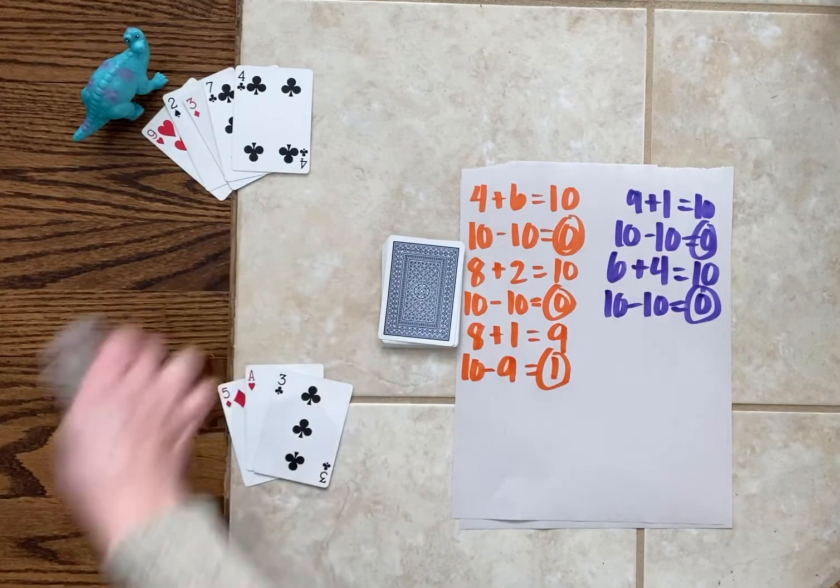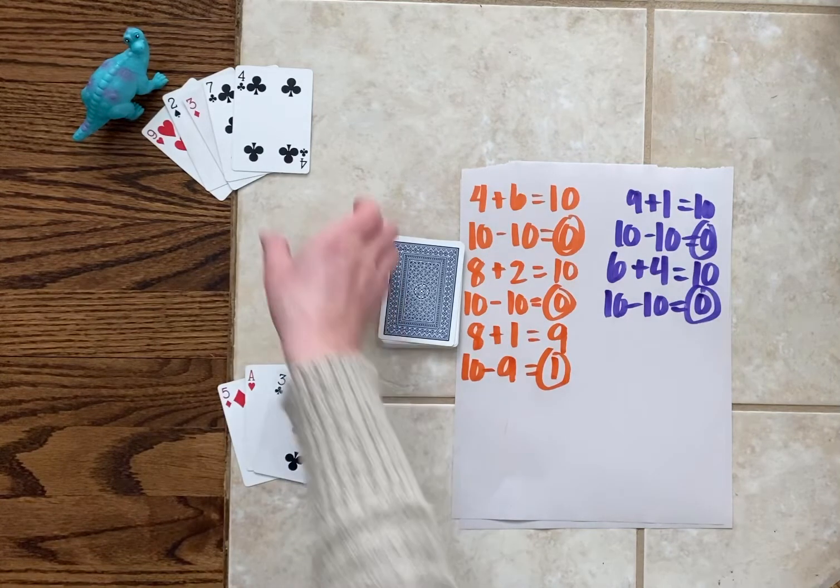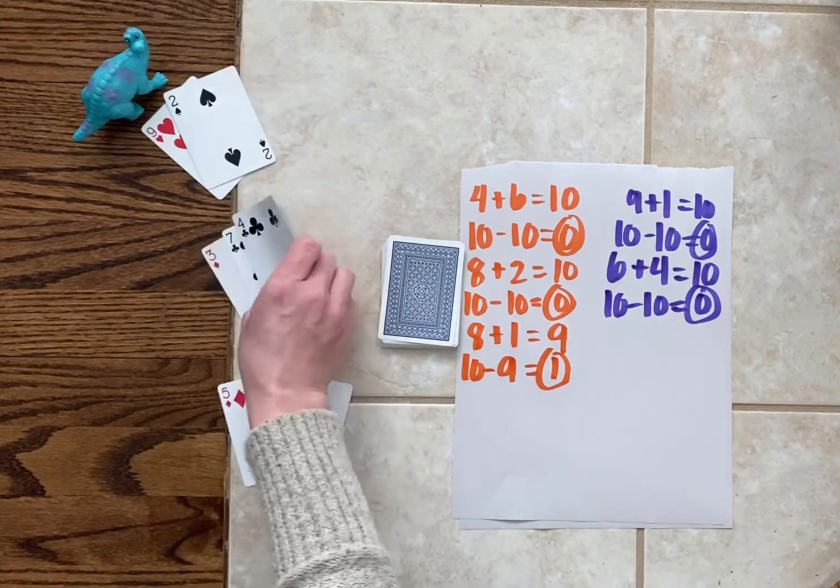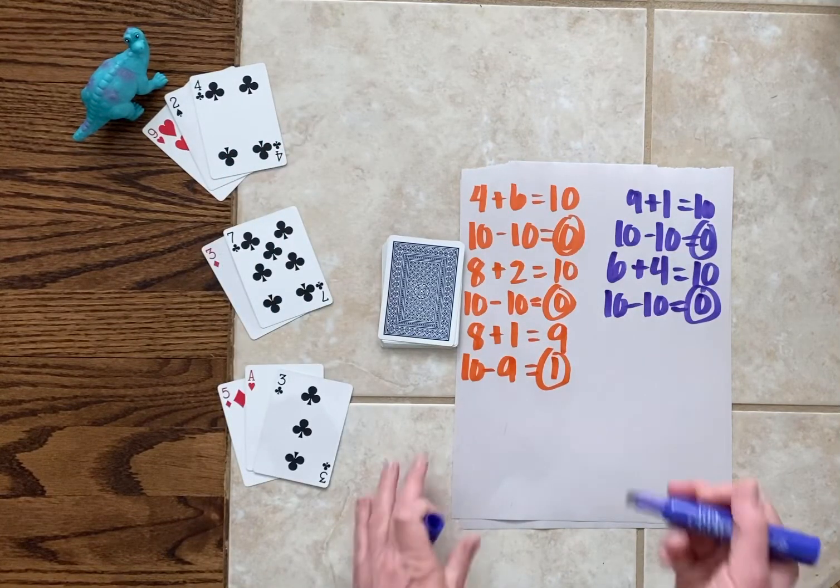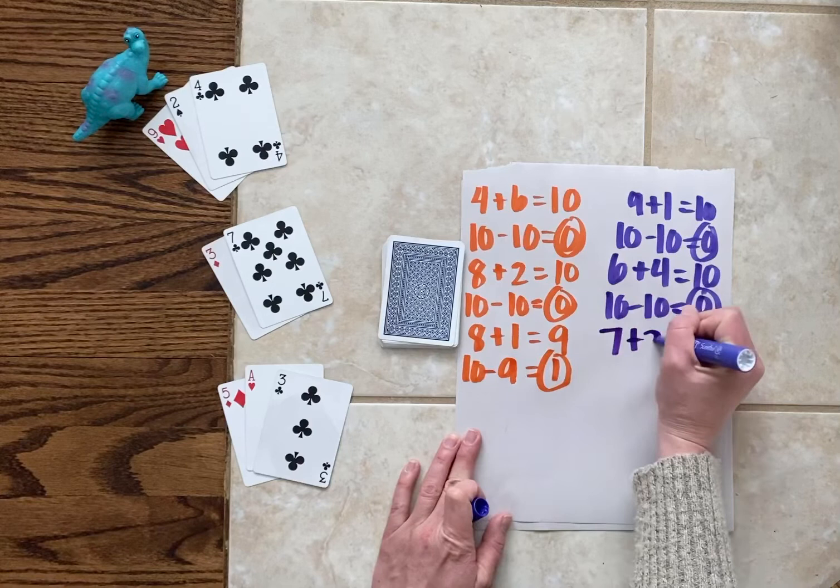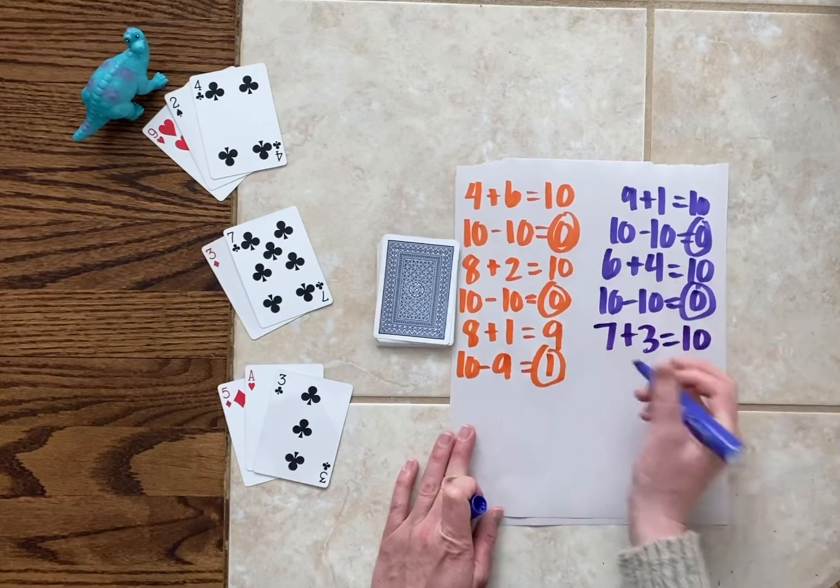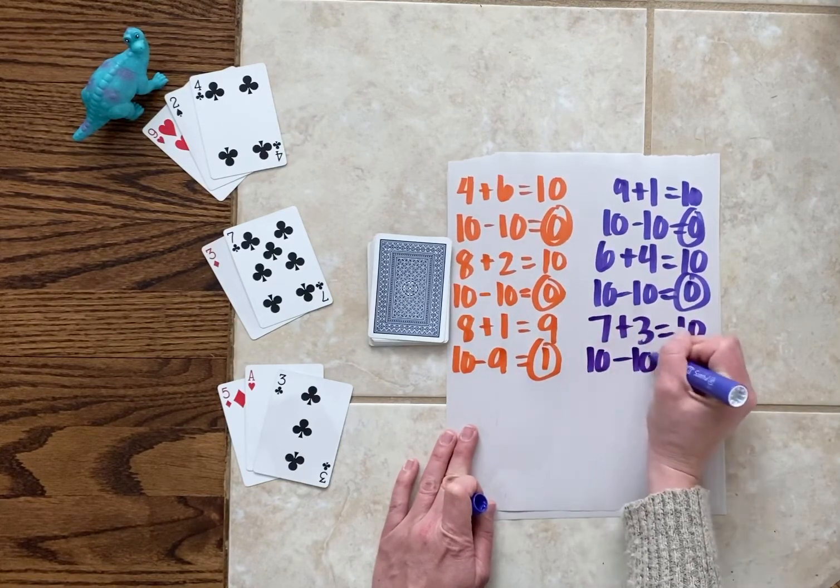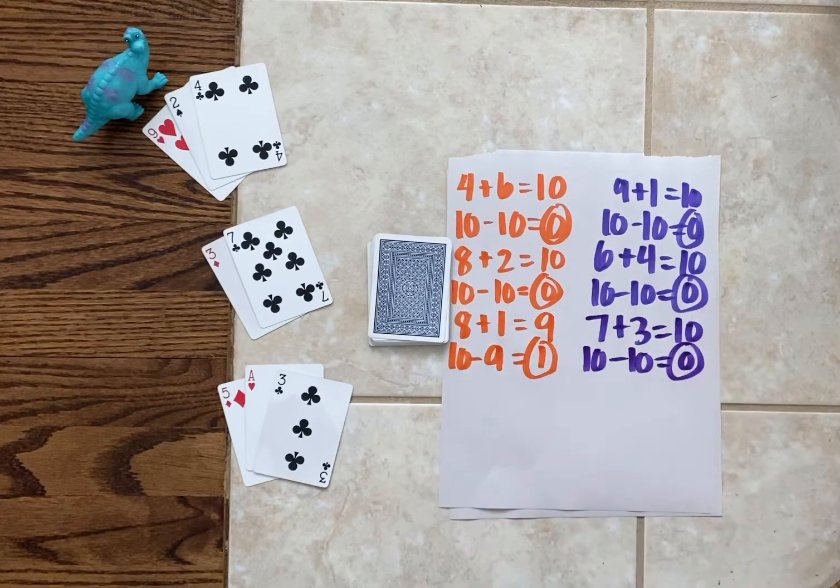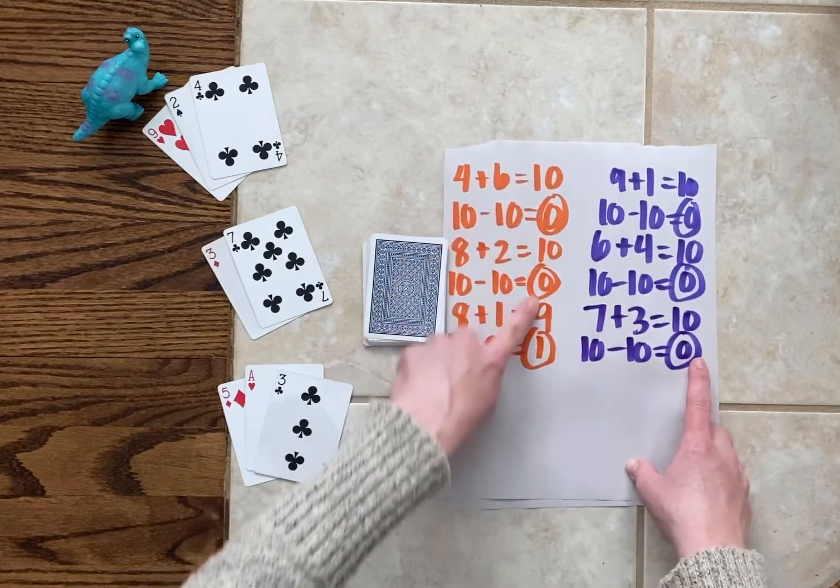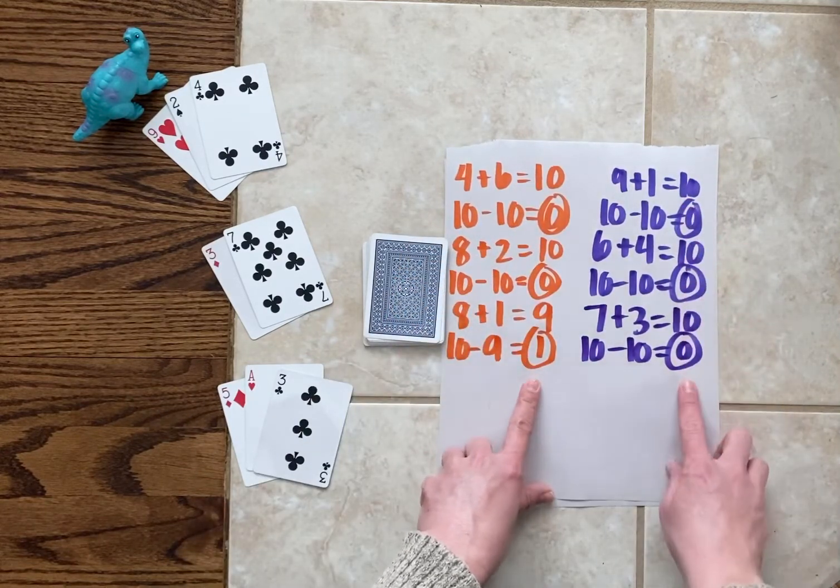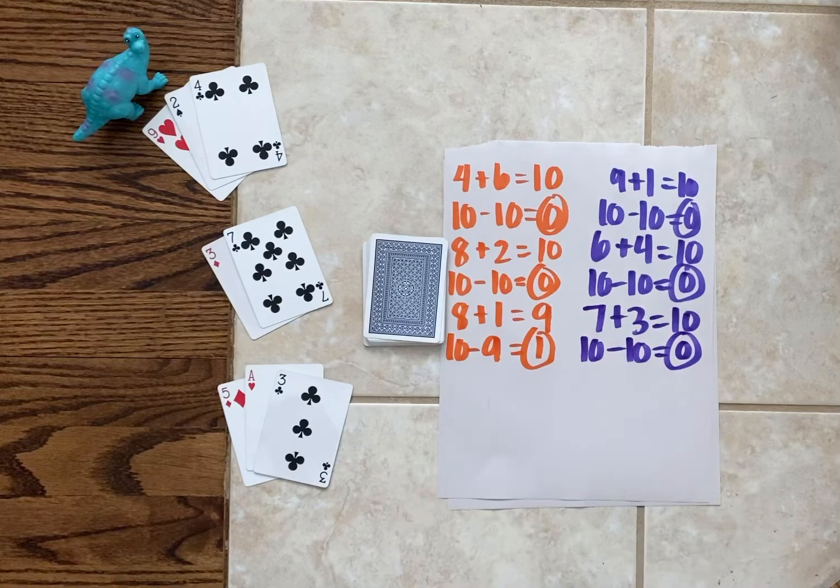Now it's dinosaur's turn. Dinosaur sees that he has a seven and a three. Those go together to make 10. So dinosaur can get exactly to 10 this round. Our target number is 10. So that means dinosaur has a score of zero. Right now dinosaur is beating me because I have one. Dinosaur has zero and you want to be the person with the lowest score.